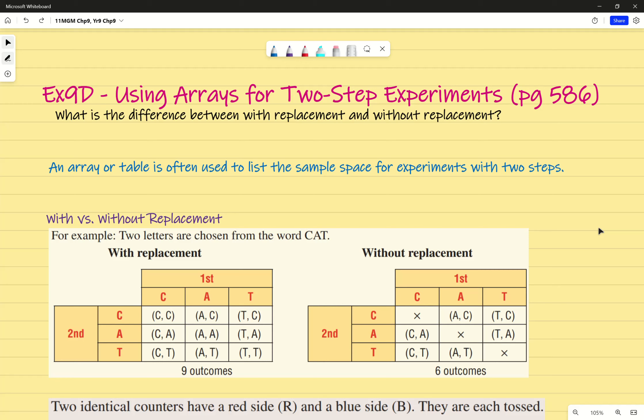Introduction to exercise 9D on using arrays for two-step experiments, page 586. Today's question is: what is the difference between with replacement and without replacement? This is a very key thing in probability. We're making a lot of assumptions when we do probability calculations.